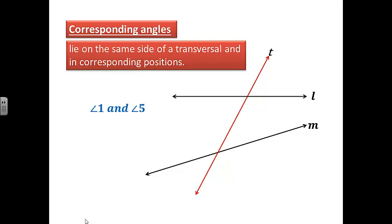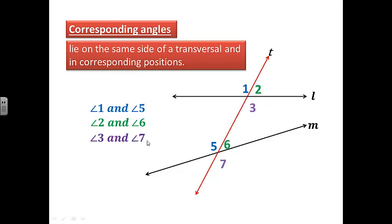Corresponding angles — let's look at an example first. Angle 1 and angle 5 are corresponding angles. They lie on the same side of the transversal — both to the left — and in corresponding positions: angle 1 is on the top of line L and angle 5 is on the top of line M. Another example would be angle 2 and angle 6, both on the right side of the transversal and on the top of their respective lines. Angle 3 and angle 7 are also corresponding angles, and lastly angle 4 and angle 8.